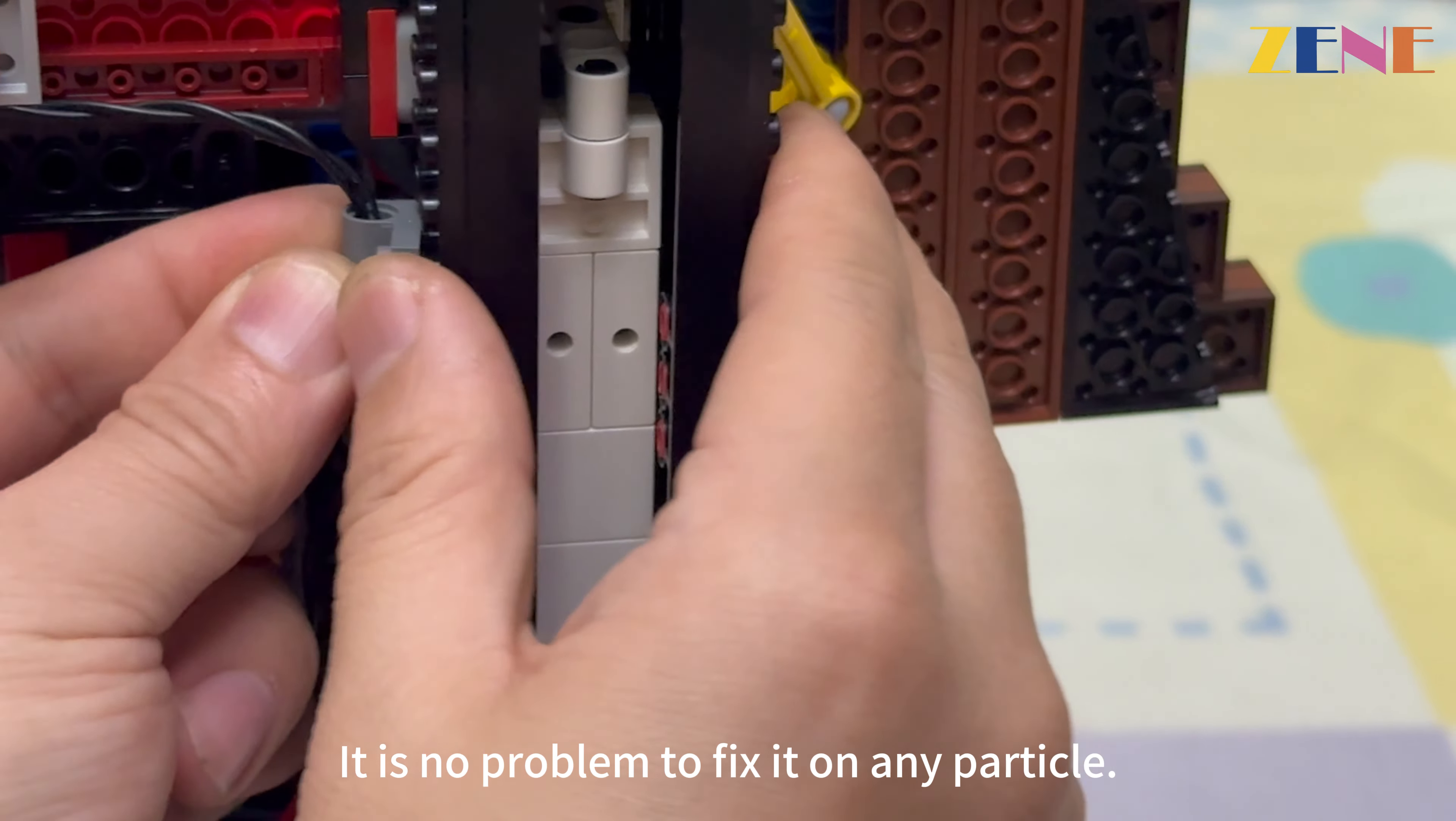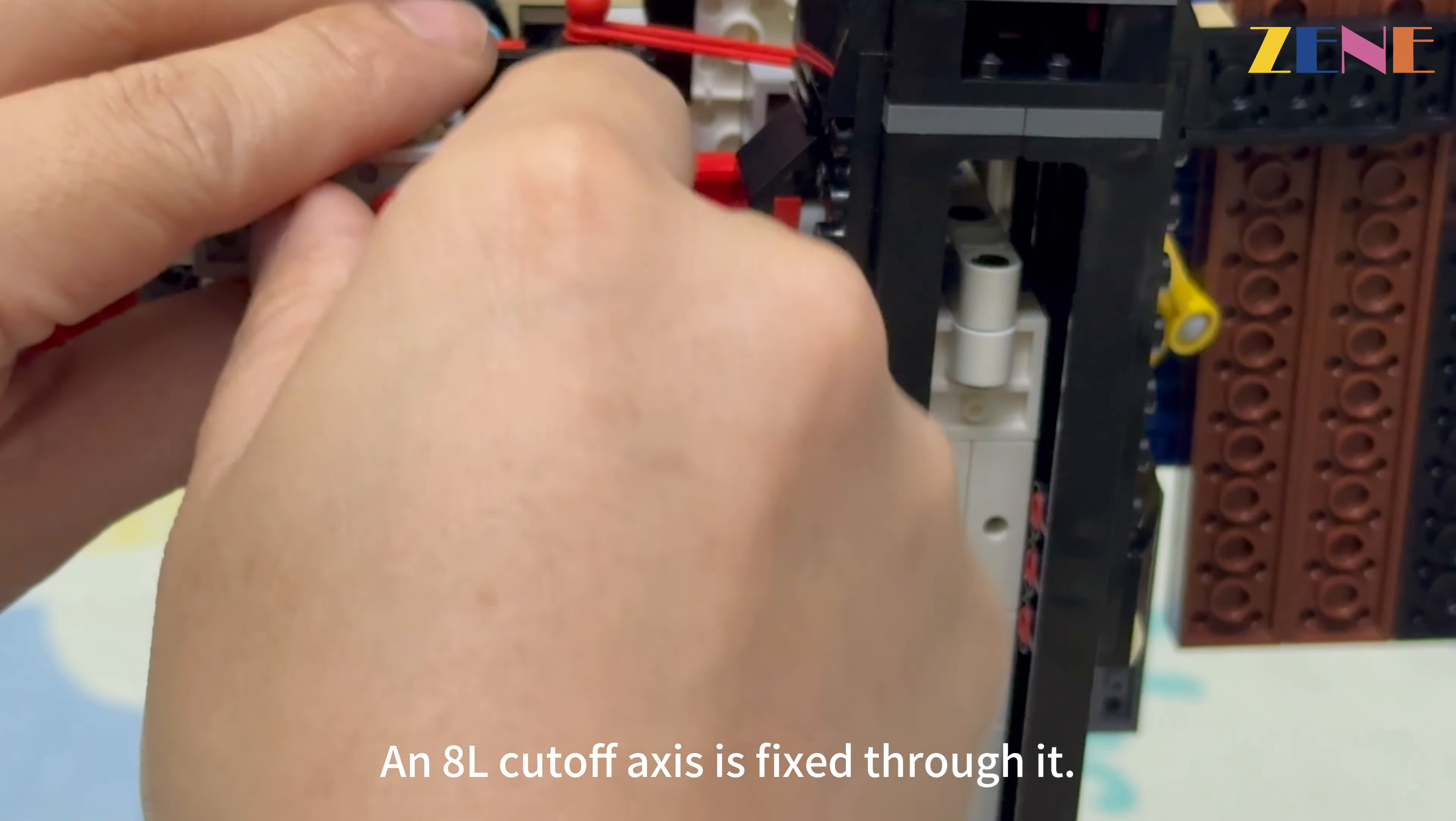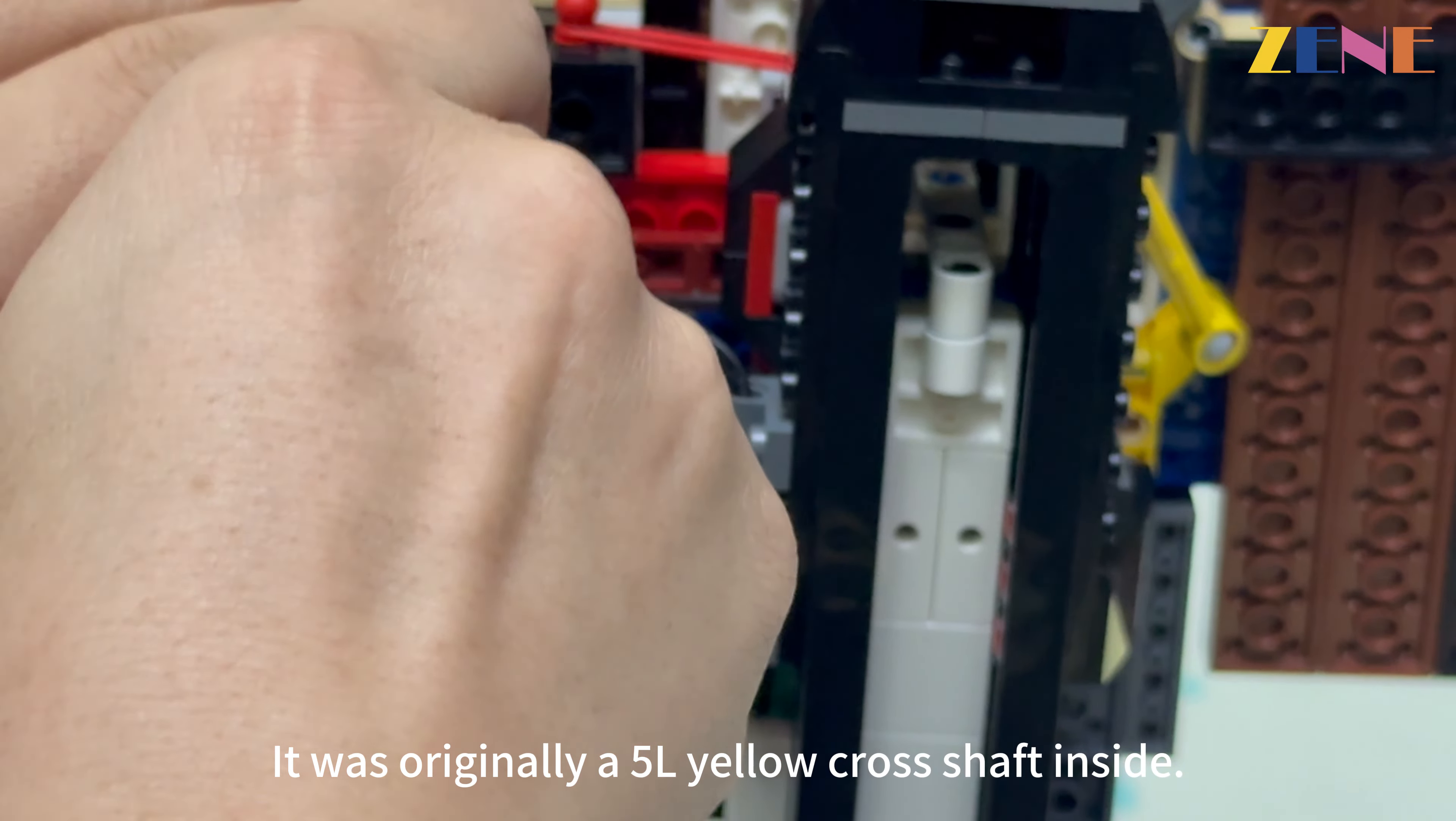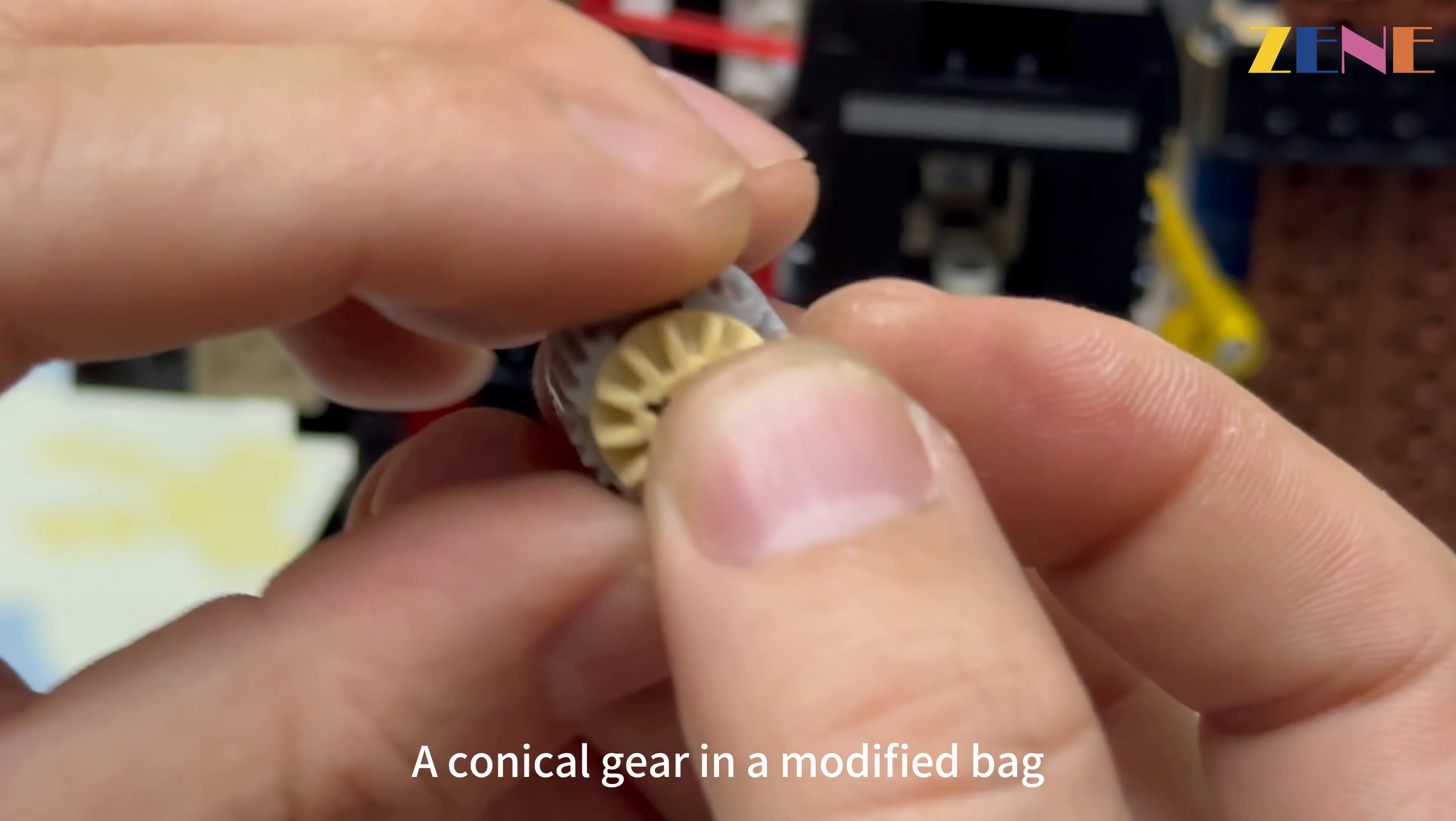What about the upper motor? It's actually plug-and-play because I have already installed it. An 8L cut-off axis is fixed through it. It was originally a 5L yellow cross shaft inside. After removing this shaft and adding a conical gear from the modified bag, the whole motor can be taken off.